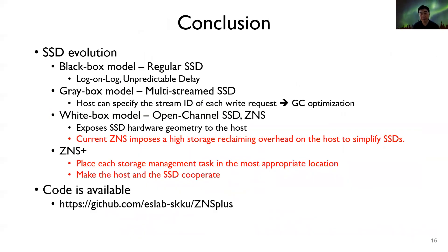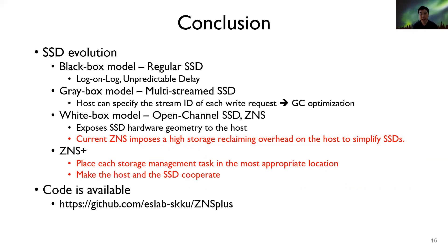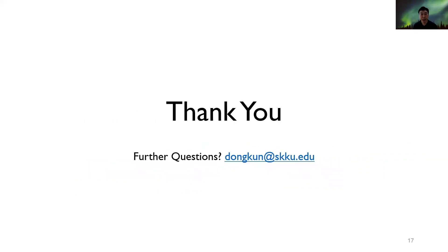Recently, SSDs have evolved from the black box model to the gray box and white box models. The white box model SSD, such as ZNS, exposes its hardware geometry to the host to simplify its internal operations. However, the current ZNS imposes high storage reclaiming overhead on the host. Our proposed ZNS+ interface places each storage management task in the most appropriate location, making the host and SSD cooperate to optimize overall IO performance. Our code is available on GitHub. We welcome you to improve our work. Thank you for watching our presentation.